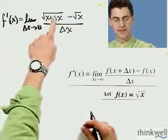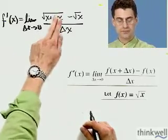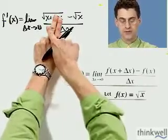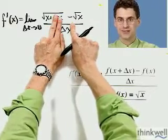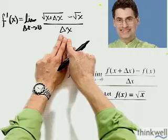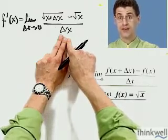There's the limit. Let's take it. If delta x goes to zero, then that term goes to zero, and I see the square root of x minus the square root of x. Well, that's zero. But then I have zero on the bottom too. Indeterminate form needs more work.